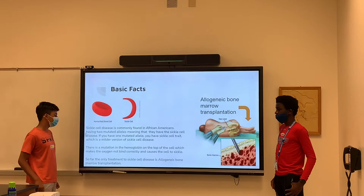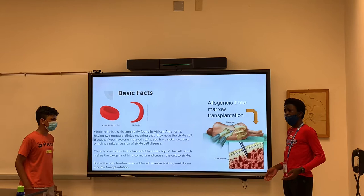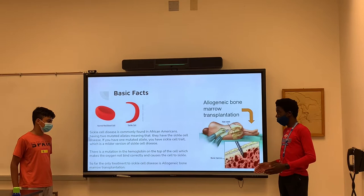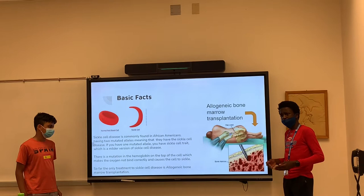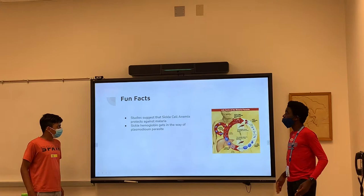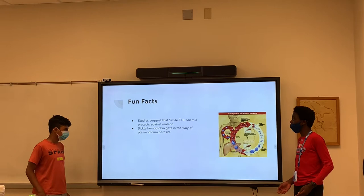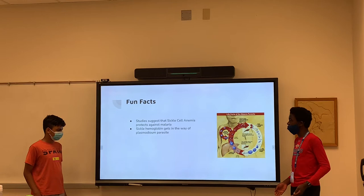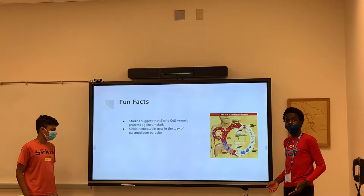The only current treatment for sickle cell disease is an allogeneic bone marrow transplant. Basically, the switch from valine to glutamic acid causes your deoxygenated hemoglobin to dissolve much slower, which causes that sickle shape. One fun fact about sickle cell is that it is suggested to actually protect against malaria — some studies have suggested that sickle hemoglobin gets in the way of the plasmodium parasite, which causes malaria.